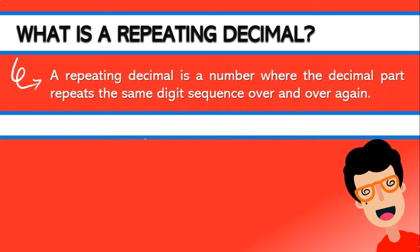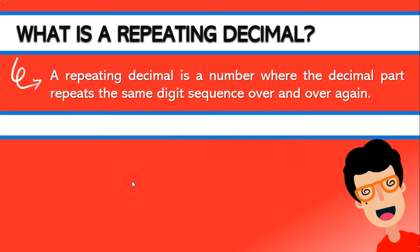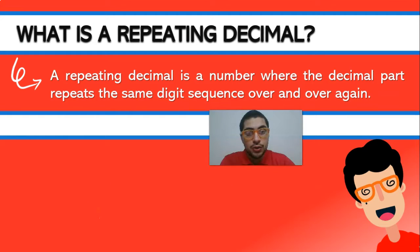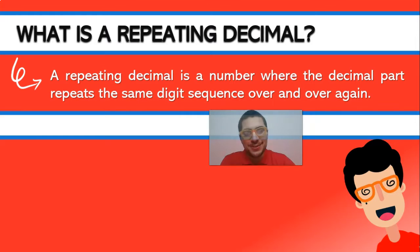A repeating decimal is a decimal number where the decimal part repeats the same digit sequence over and over again. It doesn't necessarily mean it's just one single digit — it means the digits that repeat are going to keep repeating over and over again.